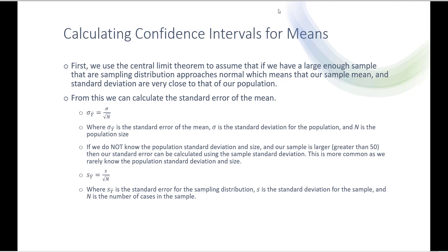Let's talk about how we actually calculate these confidence intervals for means. We use the central limit theorem to assume that if we have a large enough sample, our sampling distribution approaches normal, which means our sample mean and standard deviation are very close to that of our population. So initially, if we have the population standard deviation and population size, we could use this formula where the standard error of the mean equals the population standard deviation over the square root of the population size.